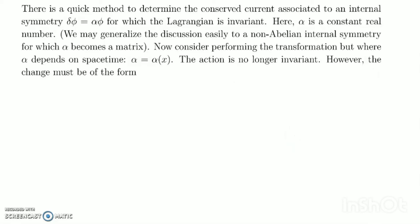There is a quick trick to determine the conserved current associated to an internal symmetry: delta phi equals alpha*phi, for which the Lagrangian is invariant, where alpha is a constant real number. We may generalize the discussion to non-Abelian internal symmetry, for which alpha becomes a matrix. Now consider performing the transformation but allowing alpha to depend on space-time: alpha equals alpha(x). The action is no longer invariant; however, the change must be of the form delta S equals integral del_mu alpha · h^mu d^4x.